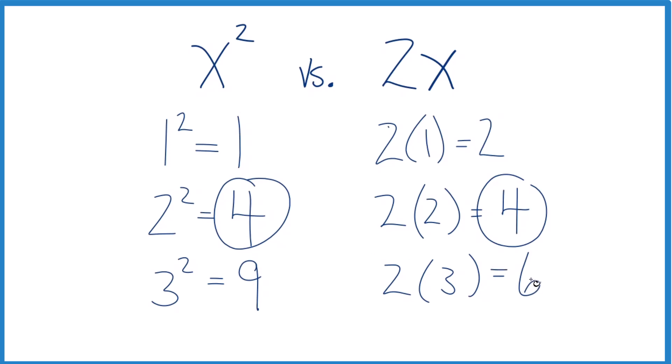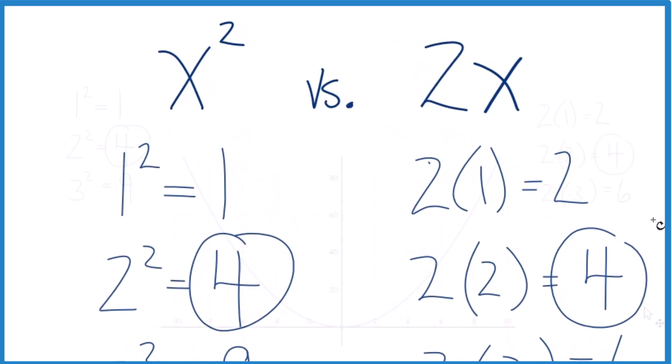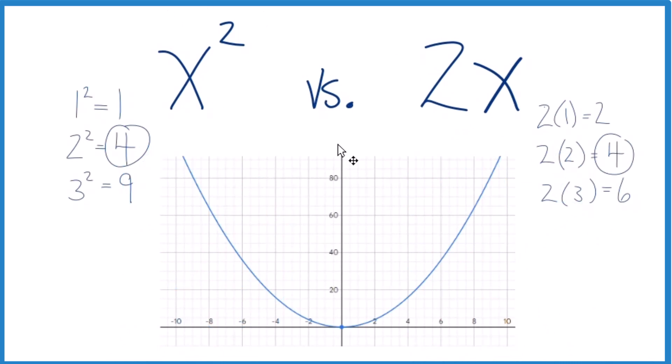One thing we can do is look at the graph to understand that a little bit better for each of these here, x squared and 2x. So this here is the graph for x squared.